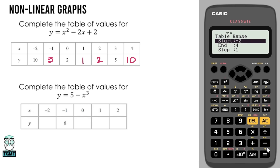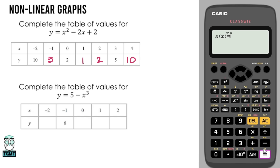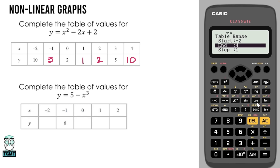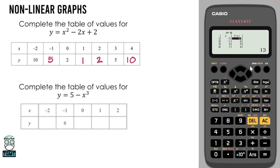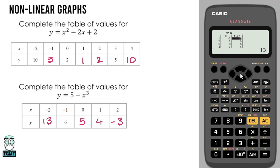For this one we have the same starting number, negative 2, going up to 2 as our end number. Steps of 1's again, and there we go — we have our full complete table. In the second column next to negative 1 we have the value of 6, which matches what's given in the table. Scrolling through, entering those numbers into our table, and then drawing the graph once they're all written down.